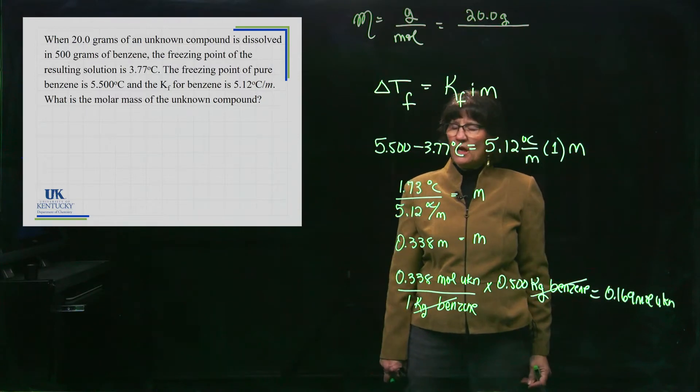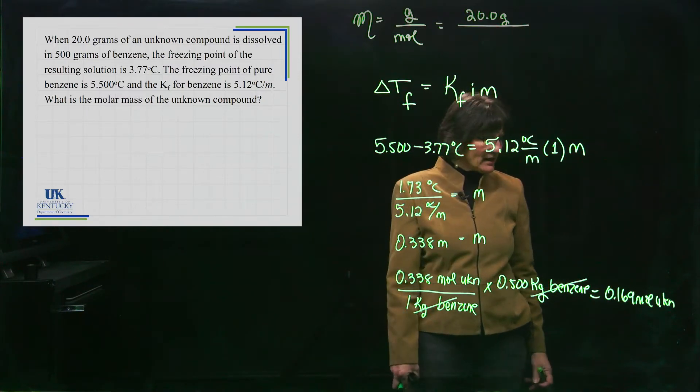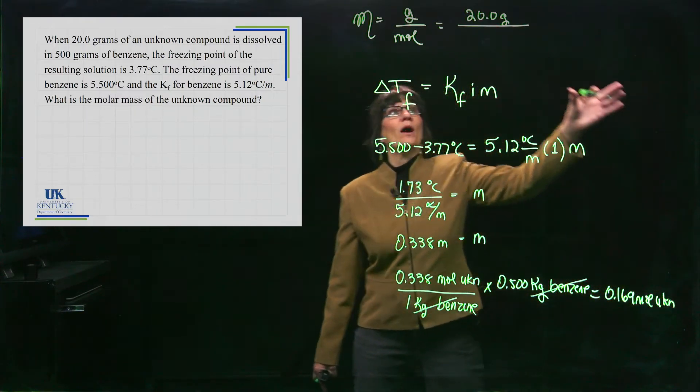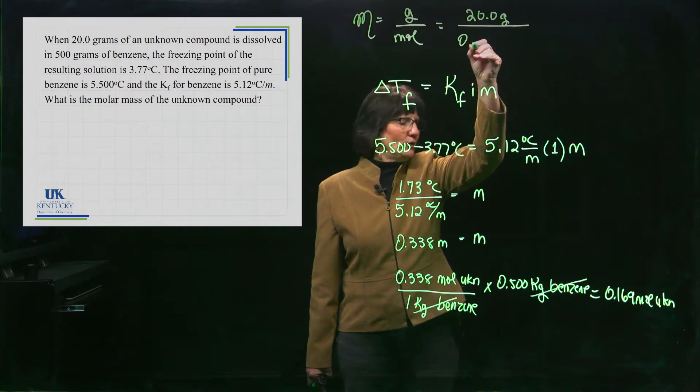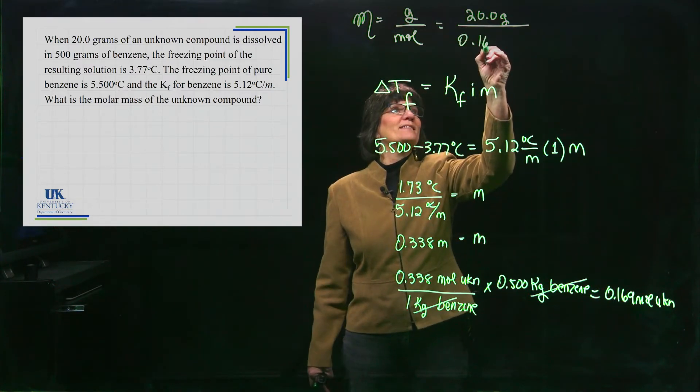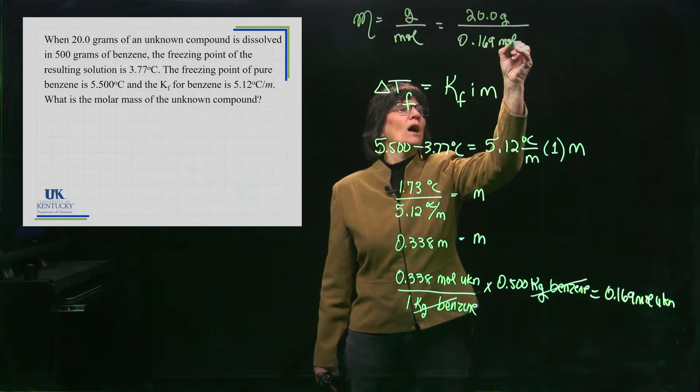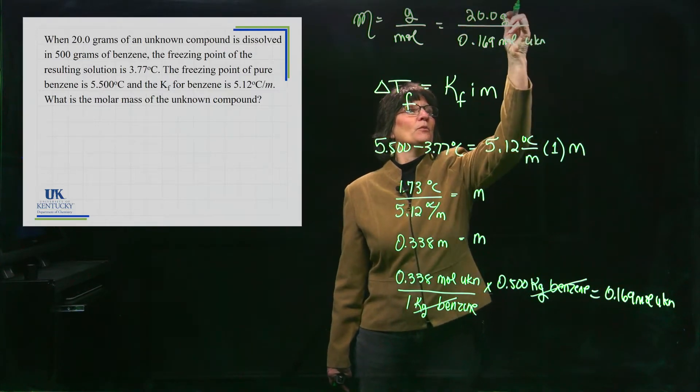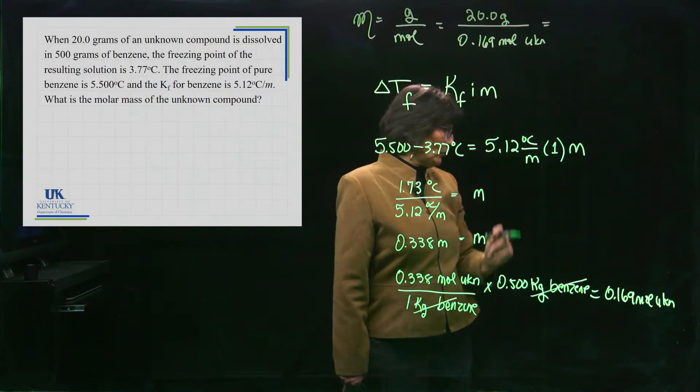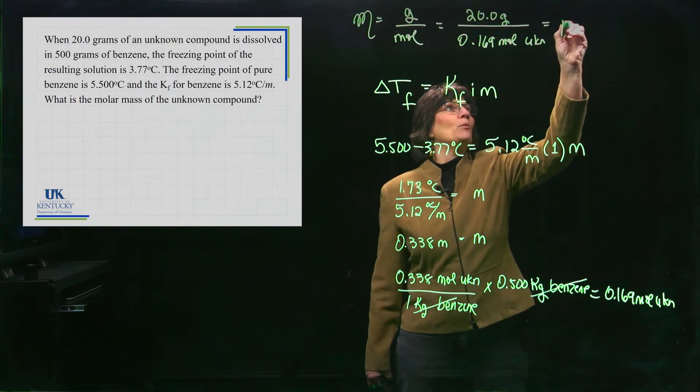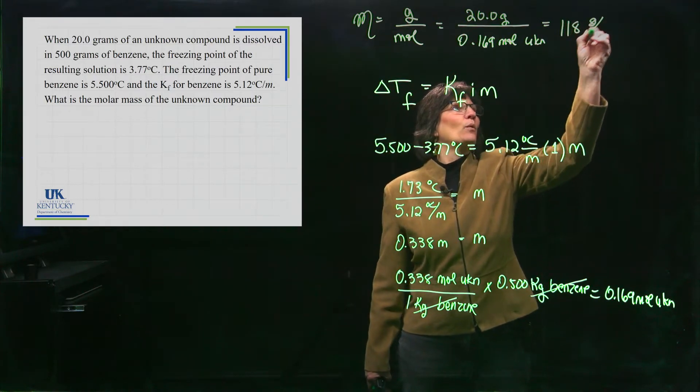Now, that's not the answer to the question. The question asks, what's the molar mass? Why did I want moles? So I could get the molar mass. So I will divide by 0.169 moles of this unknown. This was the mass of the unknown. This is the moles of the unknown. And that will give me 118 grams per mole.